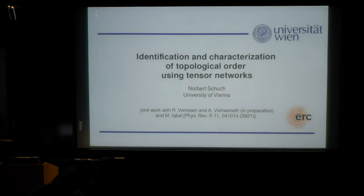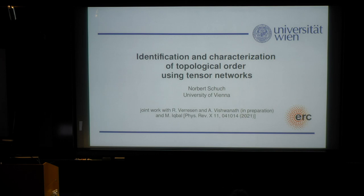In this talk, I would like to discuss two different ways to identify whether a system is topologically ordered, and also extract further information about the type and properties of topological order. This will go under the joint topic of finding order parameters for topologically ordered phases, which is challenging because, as you all know, there are no local order parameters for systems with topological order.